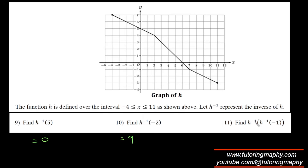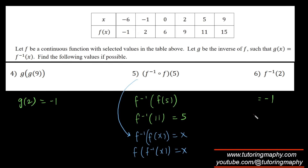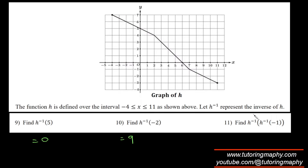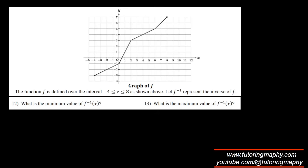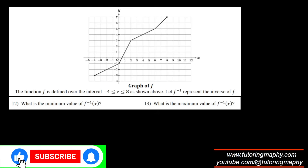For h⁻¹(h⁻¹(-1)): don't use the composition property here — these are double inverses, not f and f⁻¹. First, h⁻¹(-1): look for y = -1, which has x = 7. Now find h⁻¹(7): look for y = 7, and the corresponding x = -4. So the answer is -4.